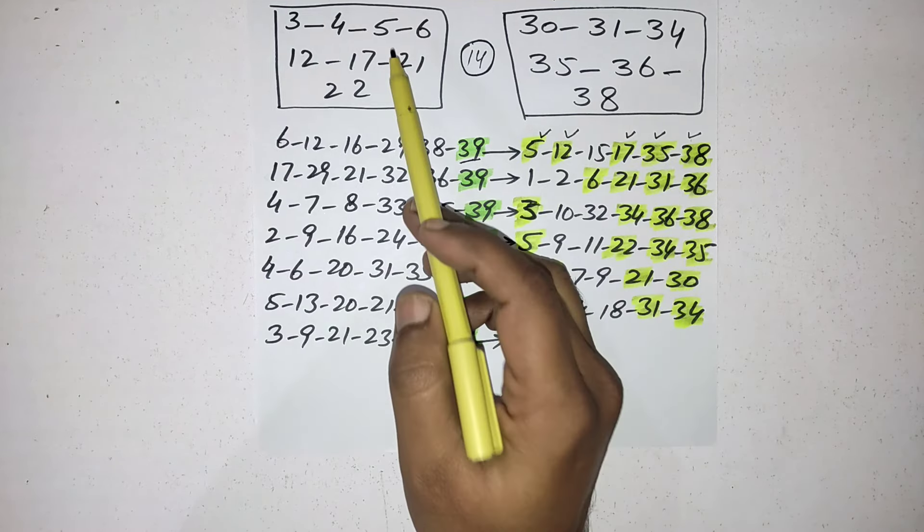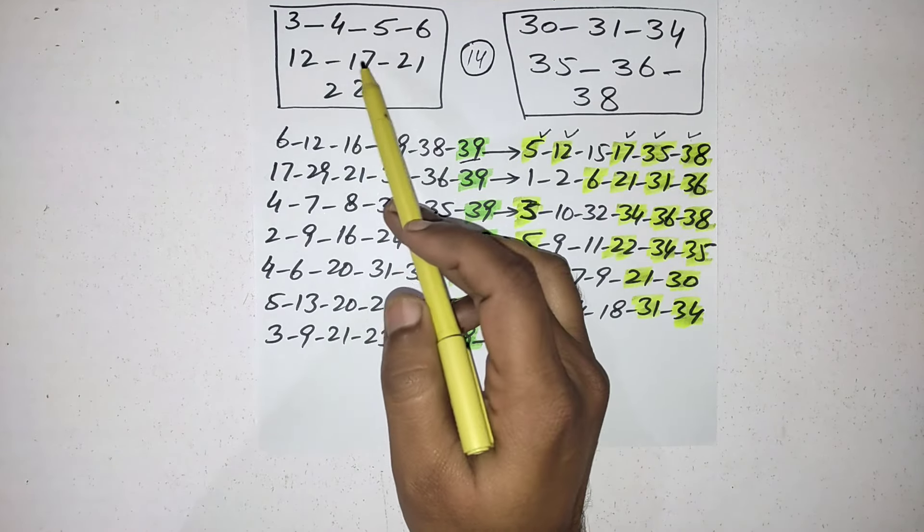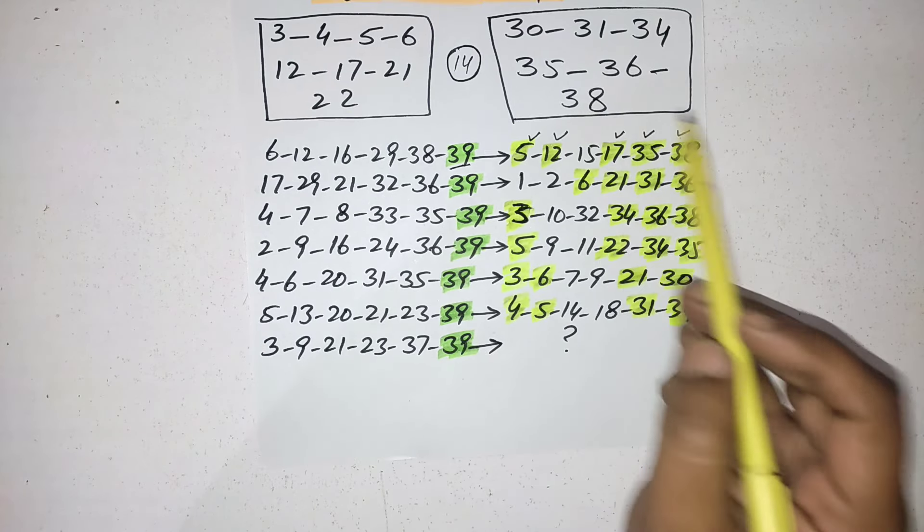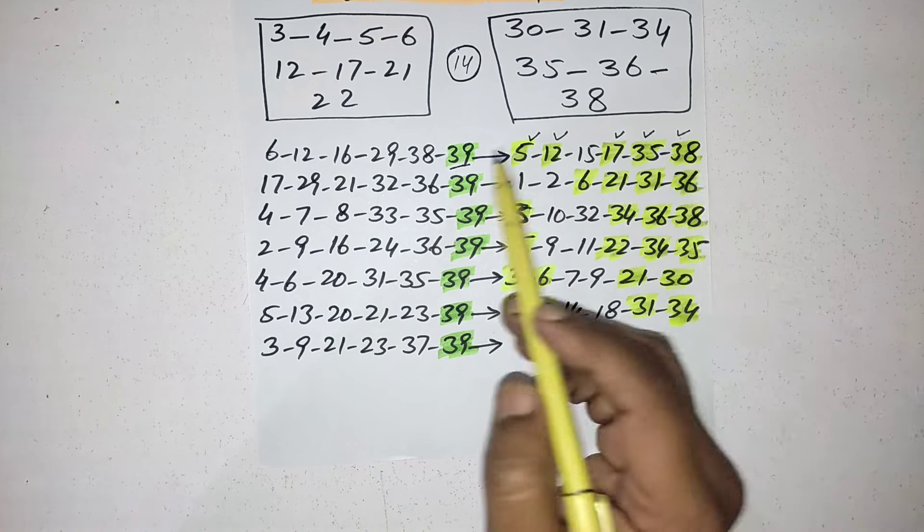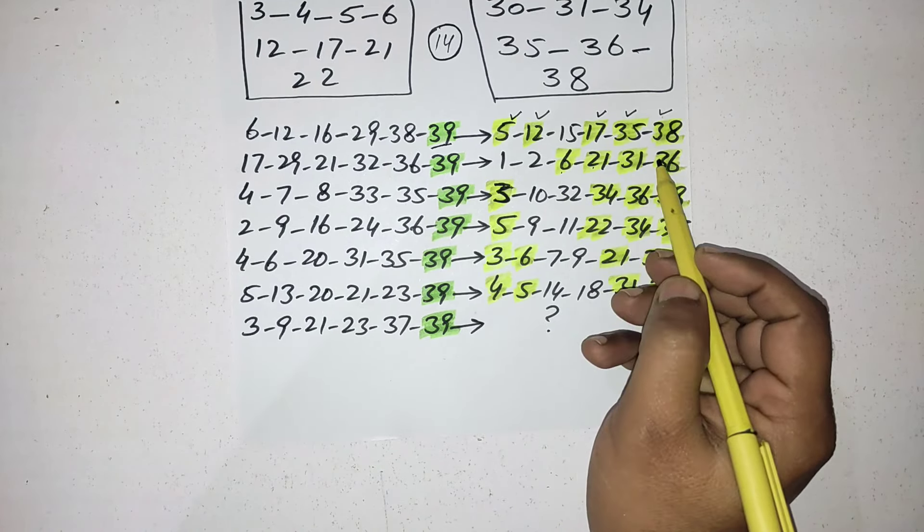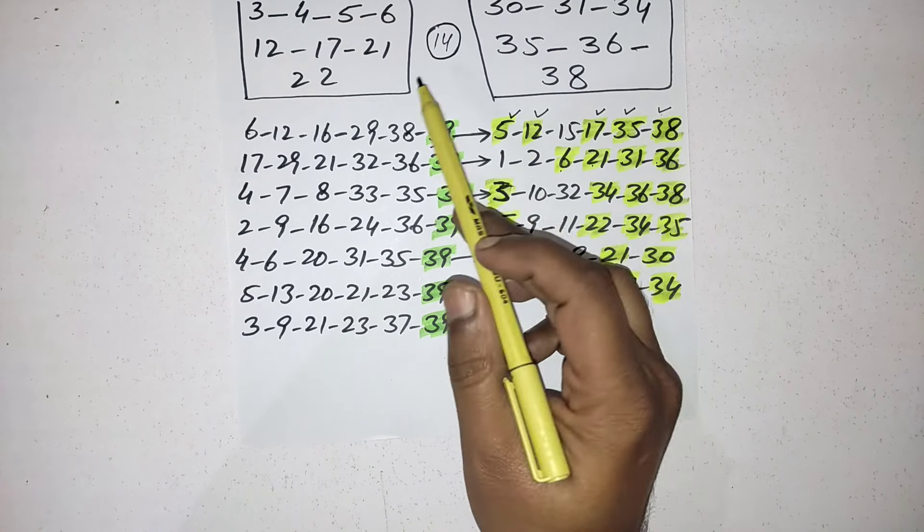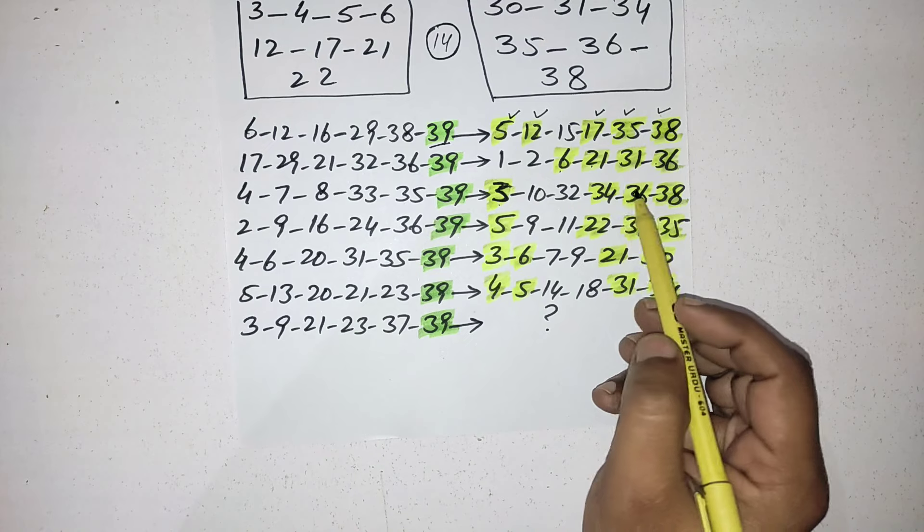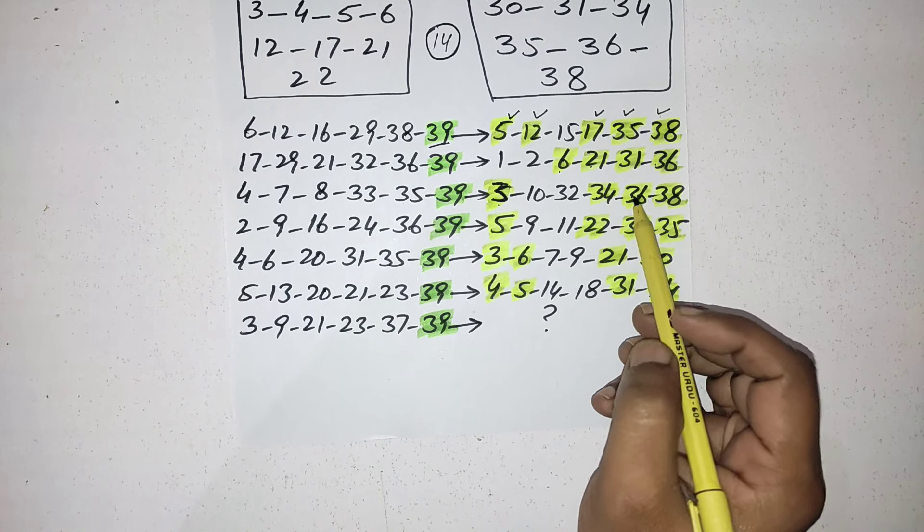Five, 12, and 17 came from here and 35 and 38 number came from here. Second time, again four numbers came from these both boxes. Third time again you can see four numbers came from here.